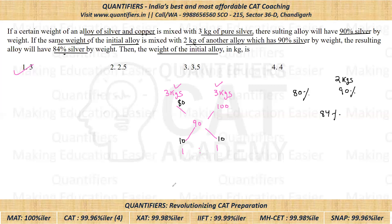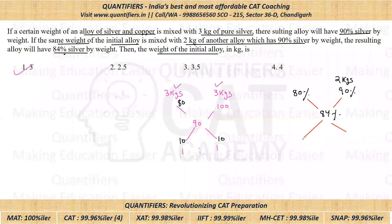Now if we apply allegation: the difference between 90 and 84 is six, and the difference between 80 and 84 is four. So the ratio is coming out to be three is to two. Since this ratio is three is to two, and this quantity is already given as two kgs, that means this has to be three kgs — which is exactly what we assumed in the first option. So that means this option is correct.